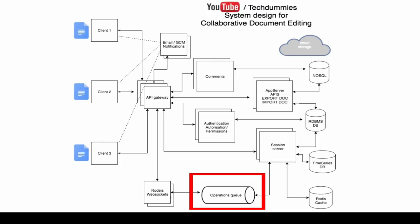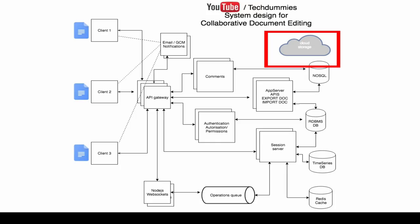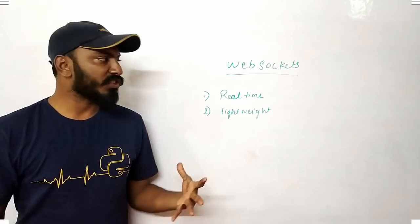You can use a time series DB, but if you want a tree or graph representation of how a line or document changed, you can also use a graph DB. There is also cloud storage — for saving the document as-is or when the user converts it to PDF, HTML, or another format. Once downloaded, it needs to be uploaded to cloud storage and a link is provided to the user via email for them to download.